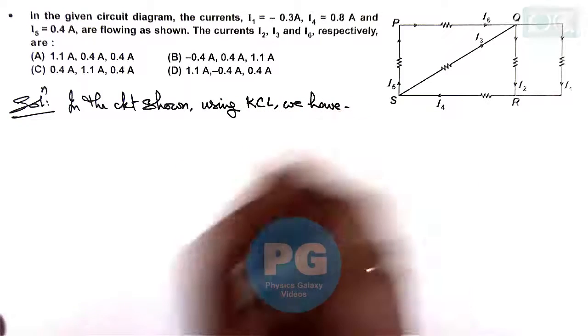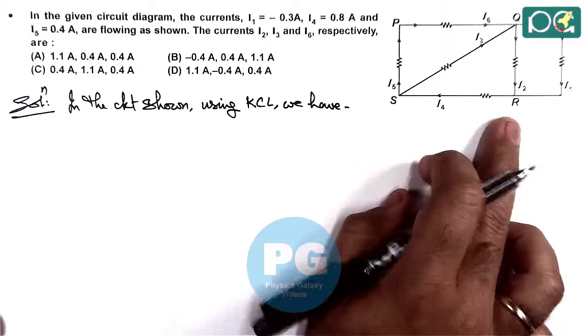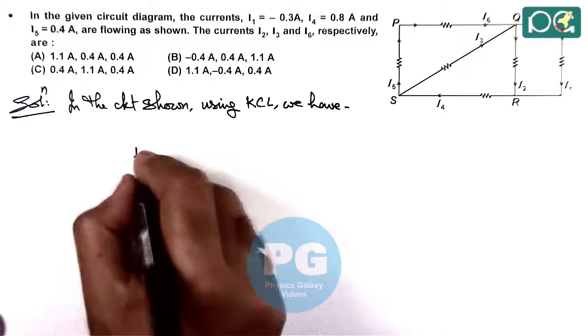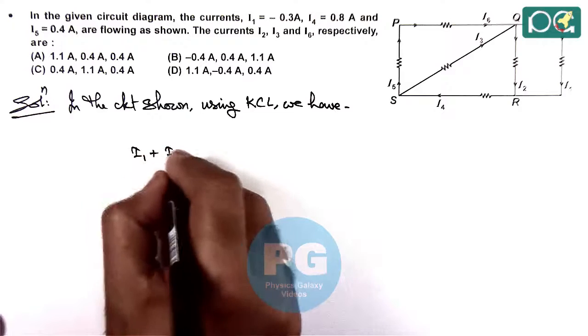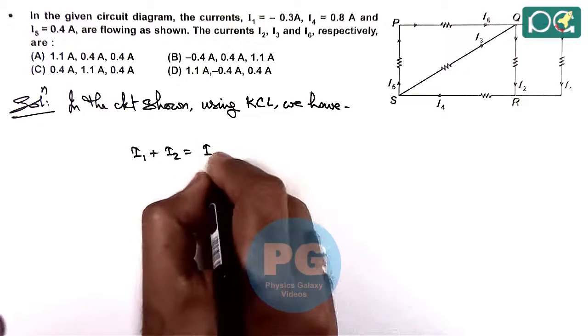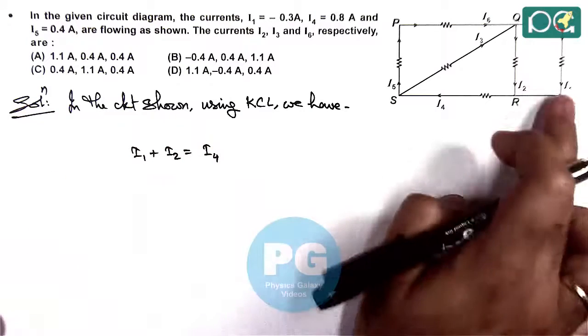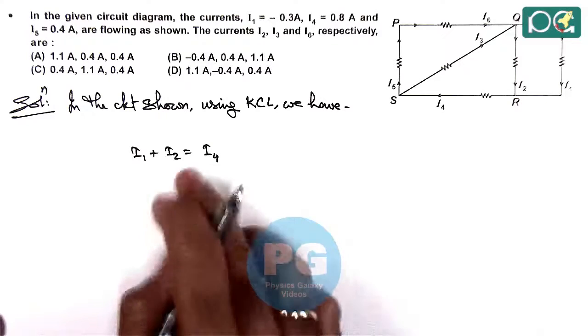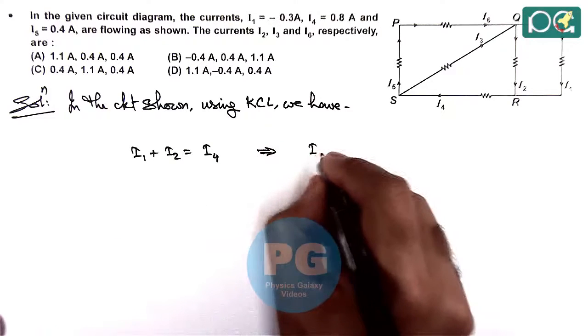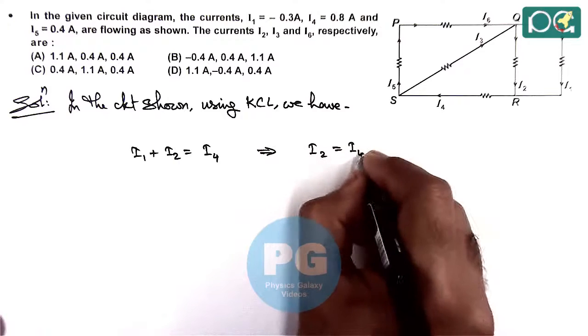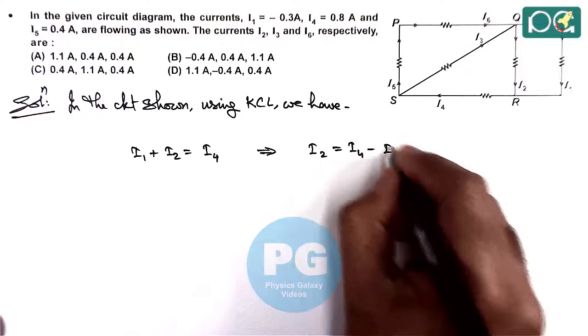In this case if we write KCL at junction r, here we get i1 plus i2 is equal to i4. So if i1 plus i2 is i4, here we can calculate the value of i2, which is i4 minus i1.